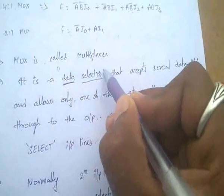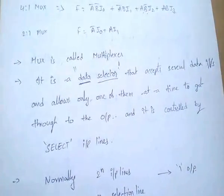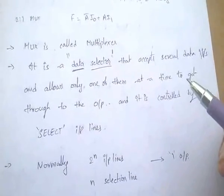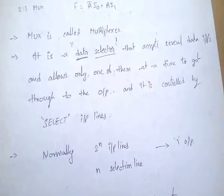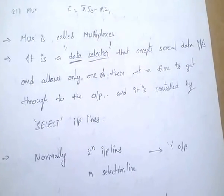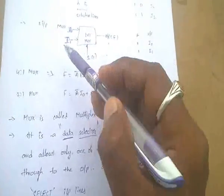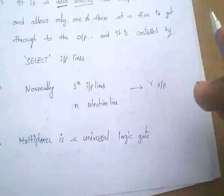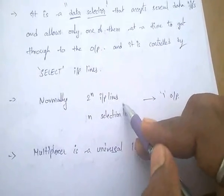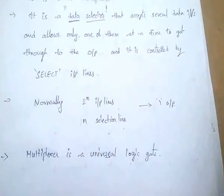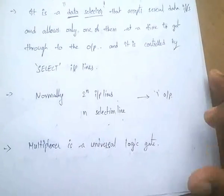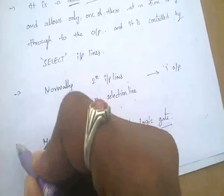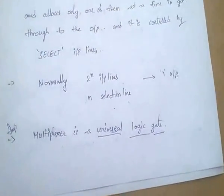The multiplexer is also called a data selector, because it accepts several data inputs and allows only one of them at a time to reach the output, controlled by selection inputs. It has 2-power-n input lines and n selection lines with one output. Importantly, a multiplexer is a universal logic gate.